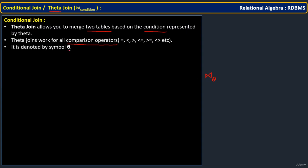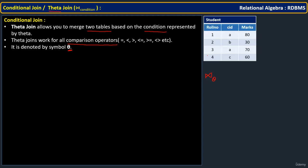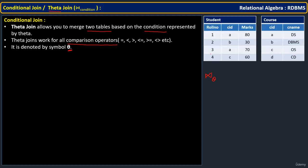Now let us develop a few queries based on given statements. For that we are going to take two tables: one table is Student and another is Course. Observe that the Student table has roll number, course ID, and marks, and the Course table has course ID and course name.